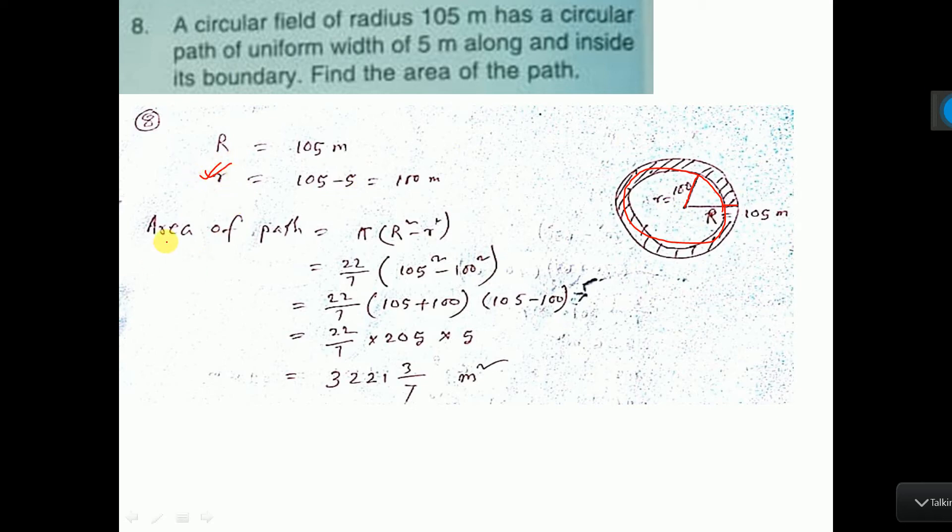Now area of the path, the formula is pi capital R square minus small r square, that is area of a circular ring. Same formula here we are using.